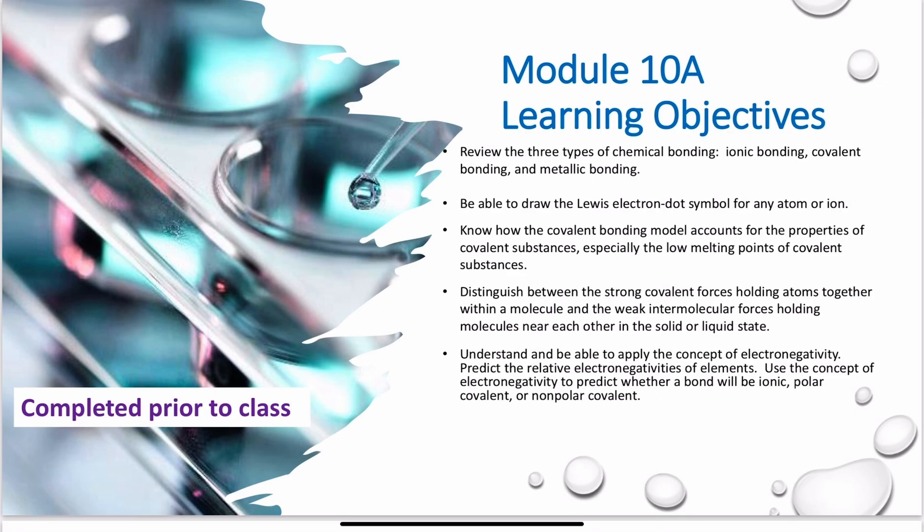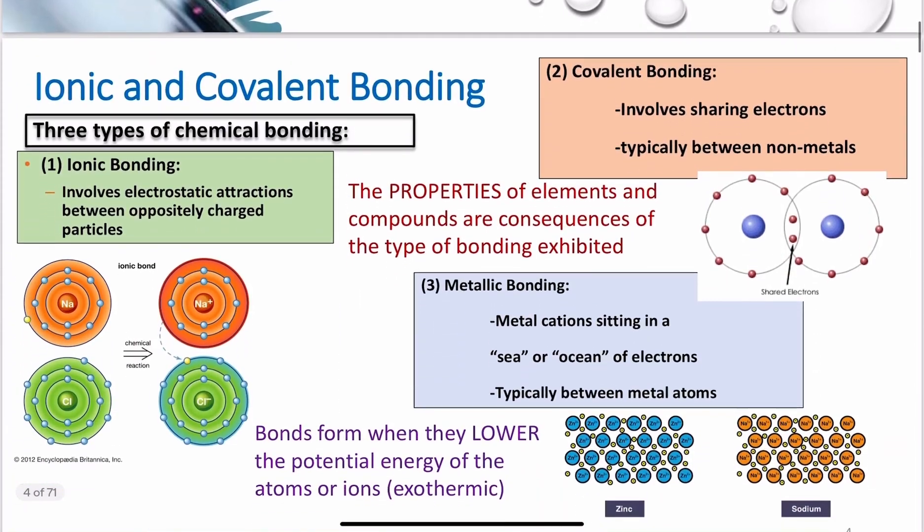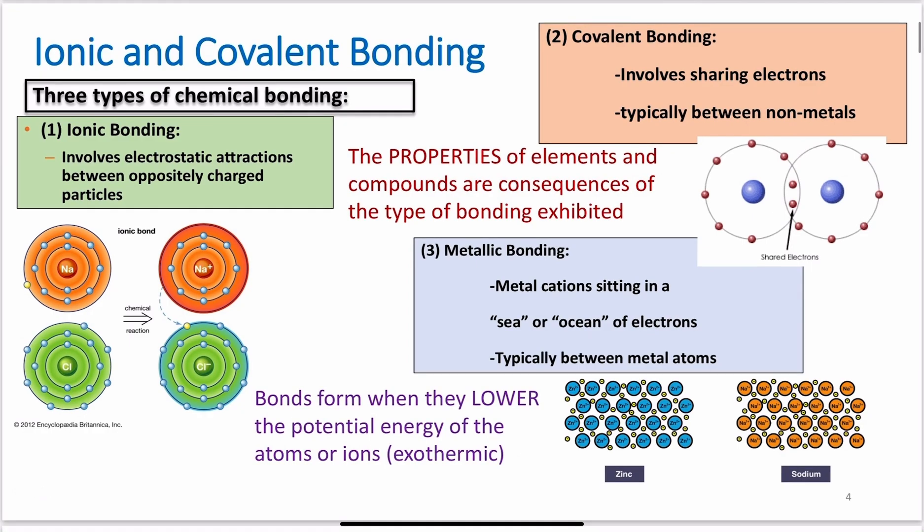You're going to need to be able to draw Lewis electron dot symbols for any atom or ion, and you should be able to recognize if something's covalently bonding or ionically bonding. Within that, we're going to get into the concepts of electronegativity and how these molecules are actually held together. So ionic and covalent bonding. Again, we covered this in Module 3, so if you're confused, go back to your Module 3 content.